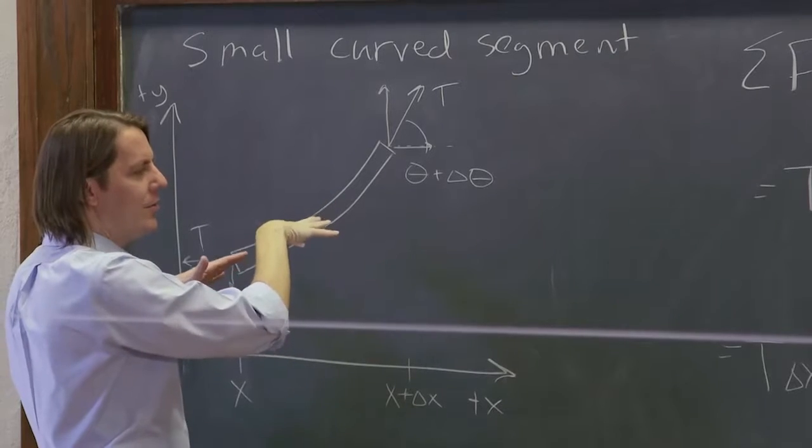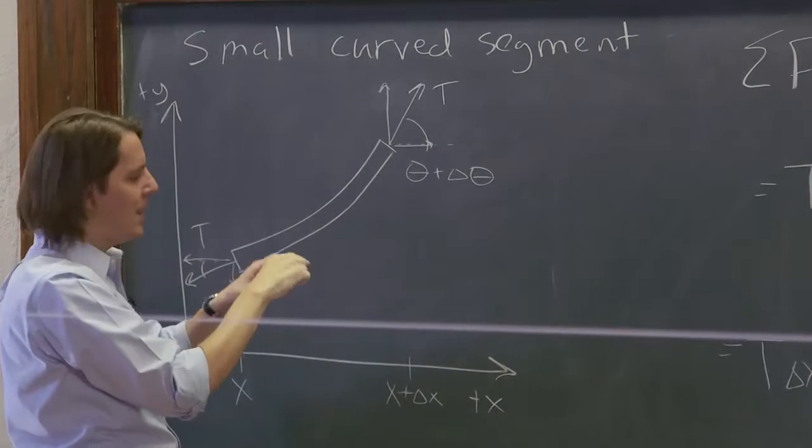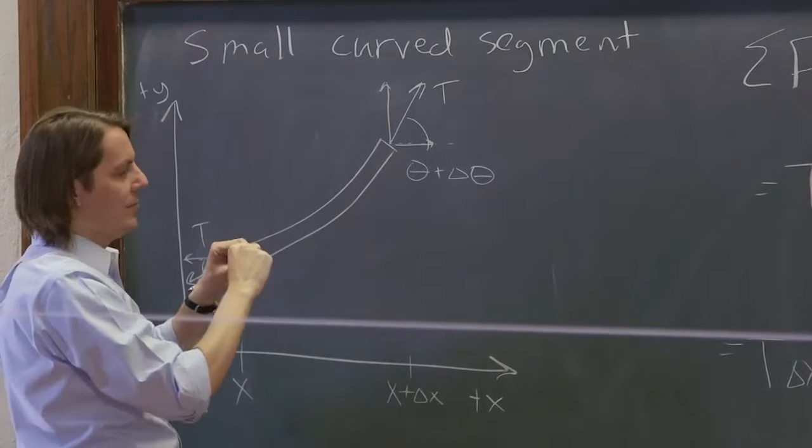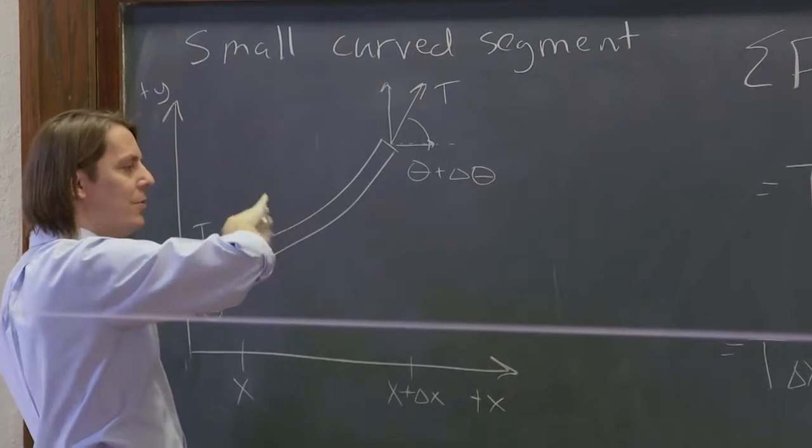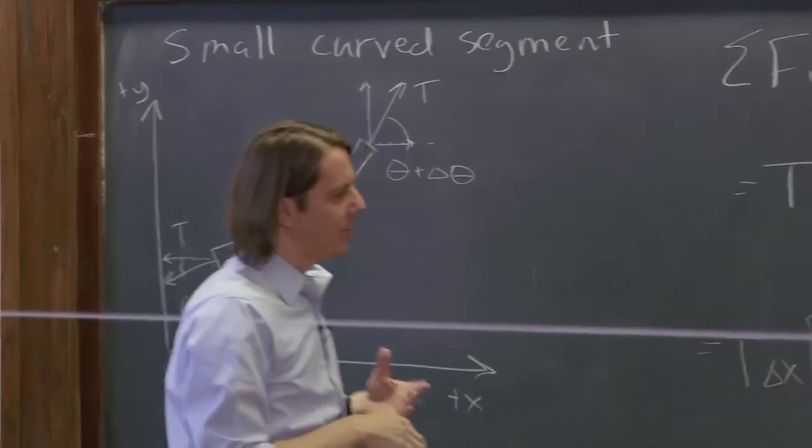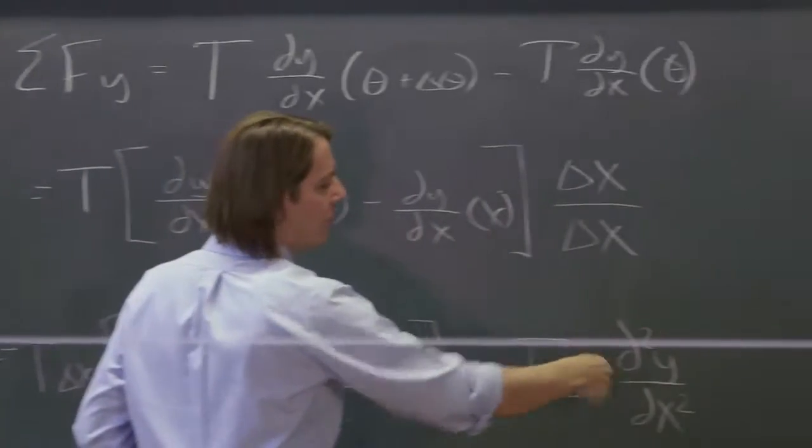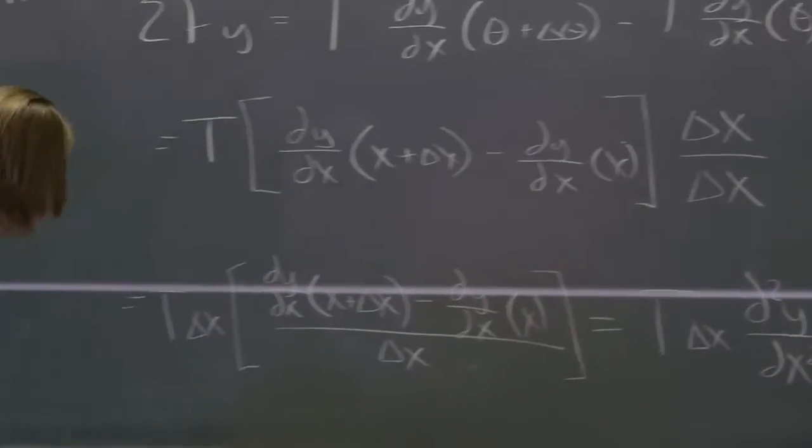But it's also telling us that it depends on the curvature, right? So if you have a flat string, that is just a slope of zero. If you have a line going, it's a slope of one. But if you have a second derivative, that means it's curved. And it's telling us that that's what gives it a force, is the curve. The string has to be curved to feel a y-force.